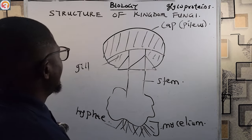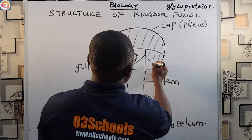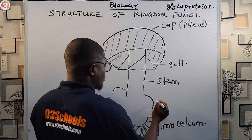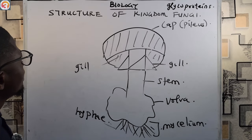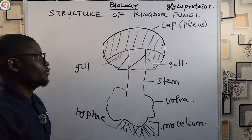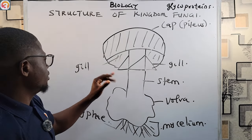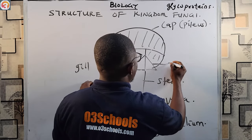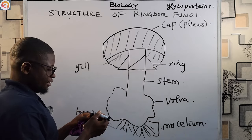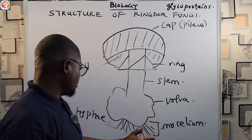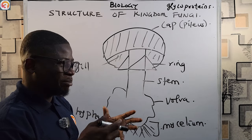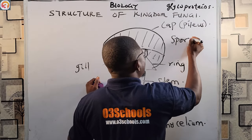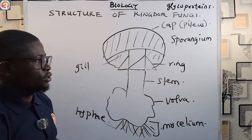To recap the mushroom structure: the gill is under the cap, then we have the ring, the stem or stalk, the vulva, the mycelium, and the hyphae. The reproductive part of the mushroom is the pylos, and it corresponds to the sporangium of the mucor. Please take note of this diagram.